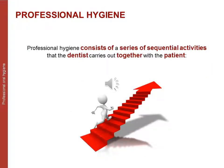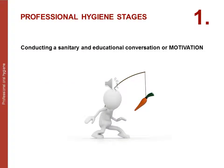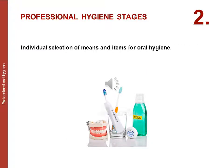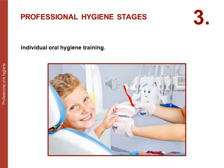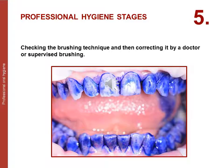Professional hygiene consists of a series of sequential activities carried out by the dentist together with the patient. The stages of professional oral hygiene are: first, conducting a sanitary and educational conversation (motivation); second, individual selection of means and items for oral hygiene; third, individual oral hygiene training; fourth, professional teeth cleaning; fifth, checking and correcting the brushing technique by the doctor (supervised brushing).